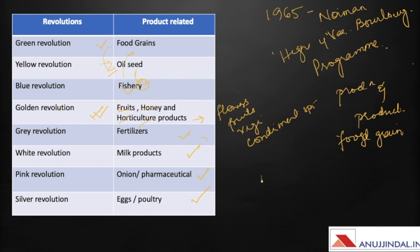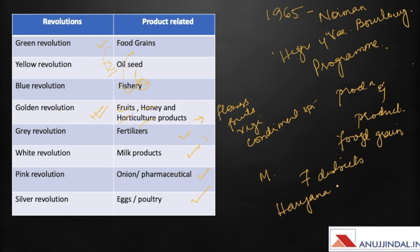In India, M.S. Swaminathan was the one who launched the Green Revolution in India, and it was done by the government of India through rigorous development programs in seven districts, mainly implemented in Haryana, Punjab, and UP.